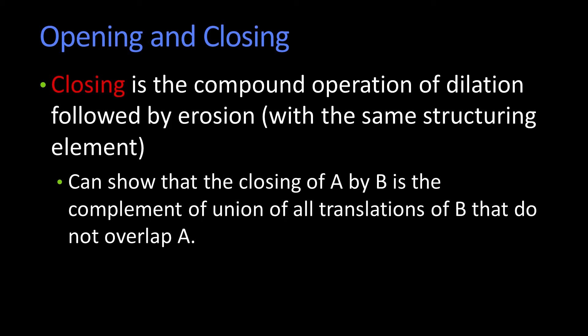So using the same words from before, you can show that closing of A by B is the complement of the union of all translations of B that don't overlap A.